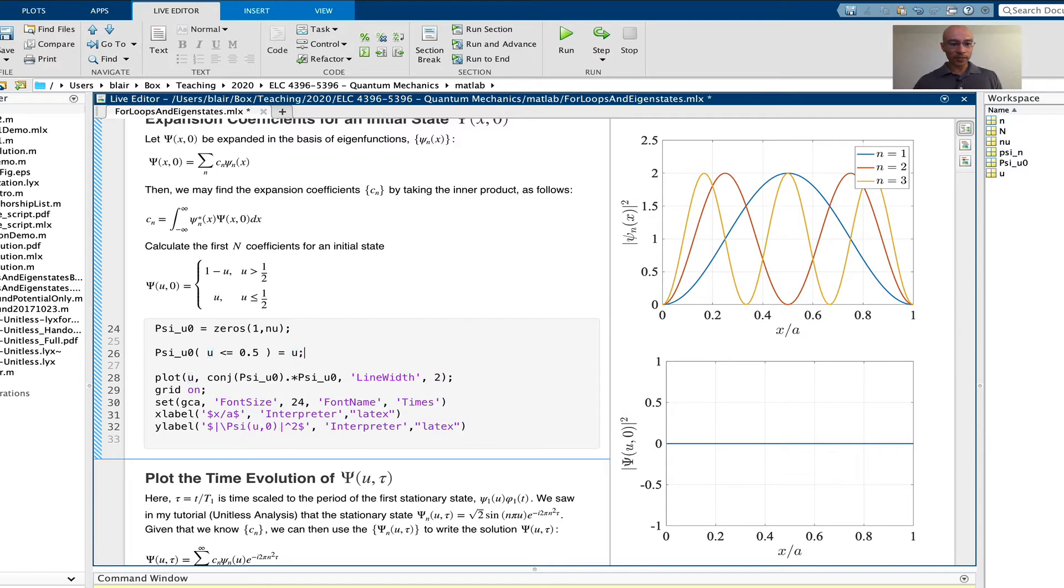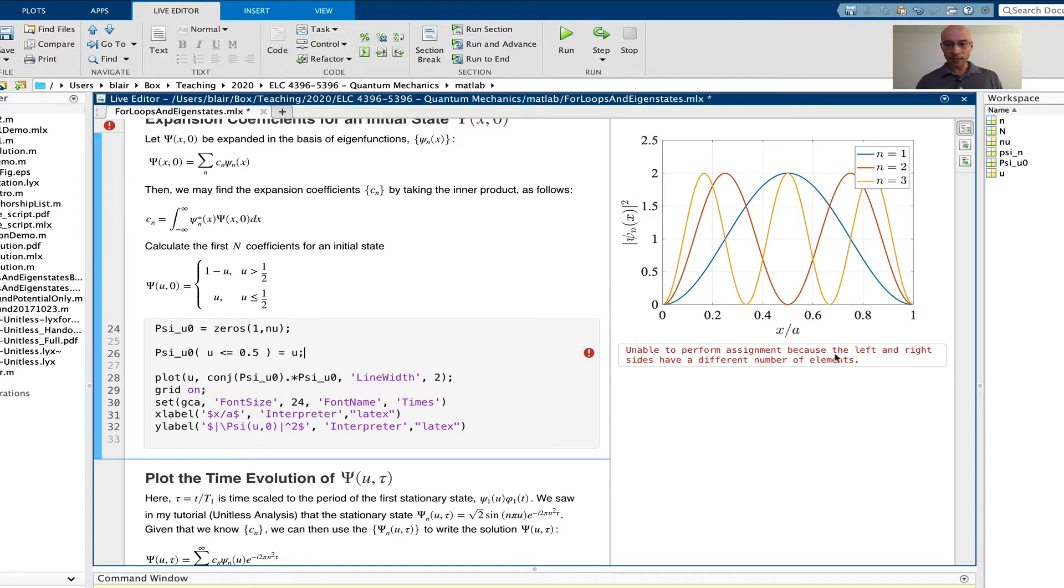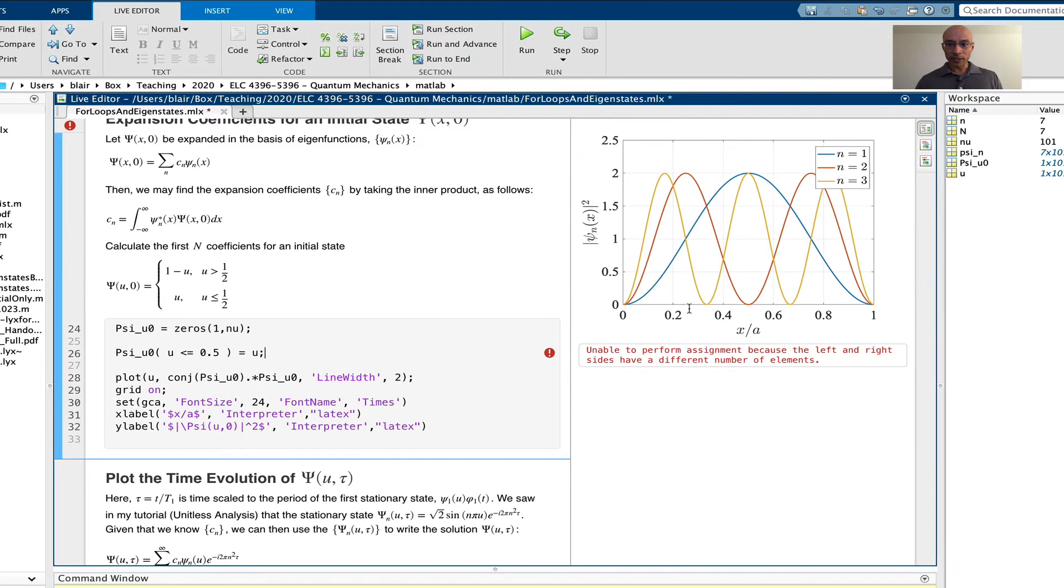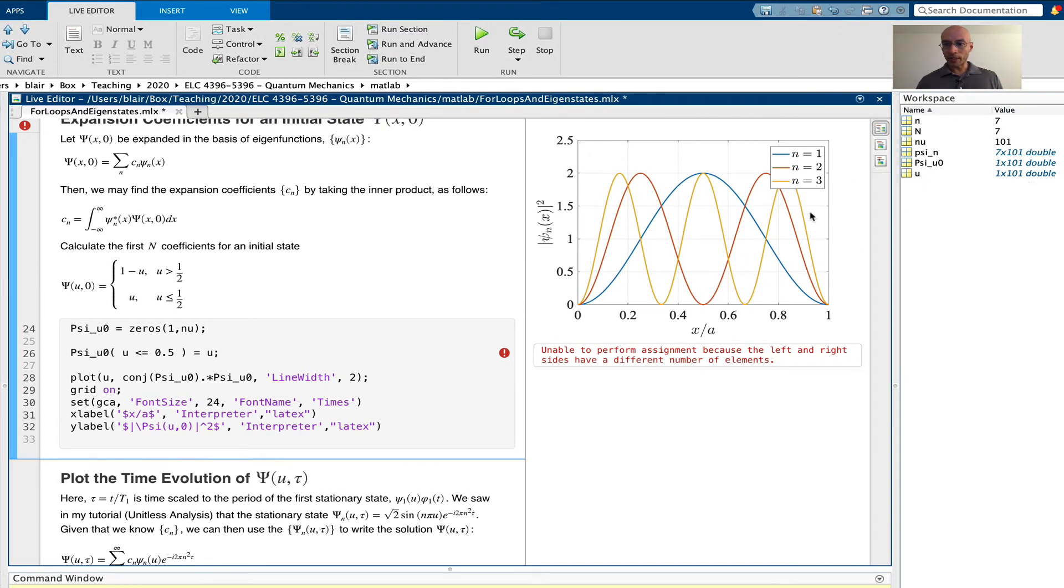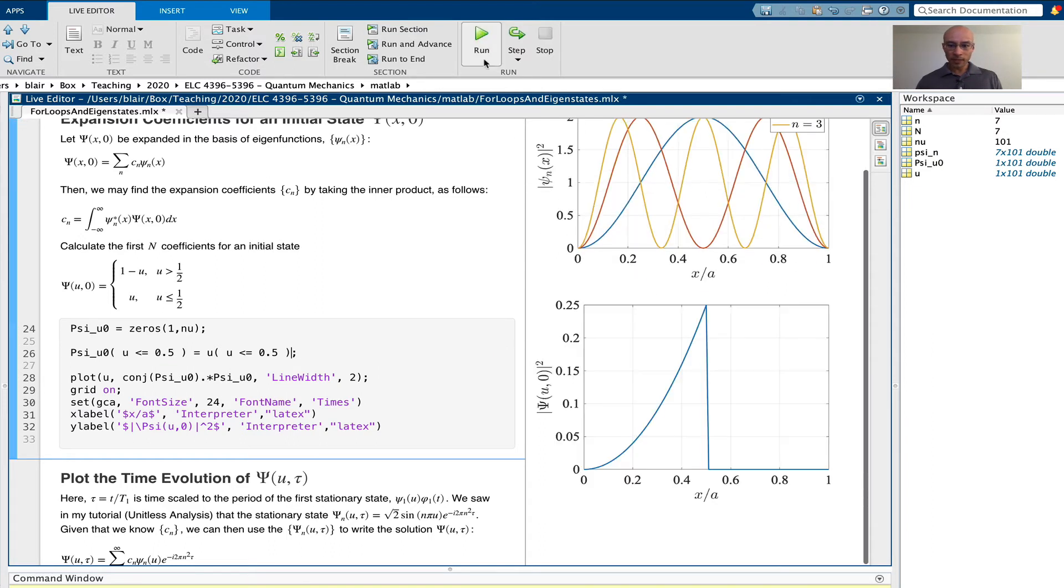Now, you're going to see that when I run this, I'm going to get an error. MATLAB's not going to like it. It says here, the reason is the left and the right sides have a different number of elements. And that's true because if you look at u up here, u has 101 elements, but you would expect that psi, where u is less than 0.5, has fewer than 101 elements. And MATLAB just can't handle that. It doesn't know how to do that well. So I need to use this same conditional subscript there. So I only specify some of the elements of u.